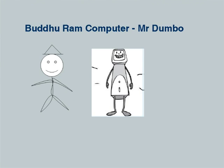We begin by looking at our computing model. We introduce a character called Mr. Dumbo or Mr. Buddha Ram. Here are two caricatures — the first is a line drawing which I attempted to draw, and the second has been more professionally drawn by a graphics colleague of mine. We designate Mr. Buddha Ram or Mr. Dumbo as our computer and see how exactly Mr. computer behaves.